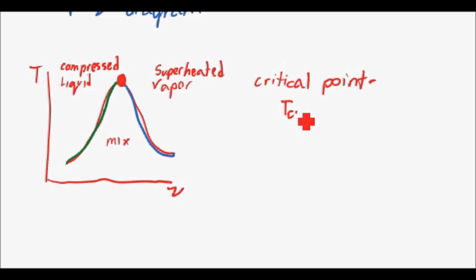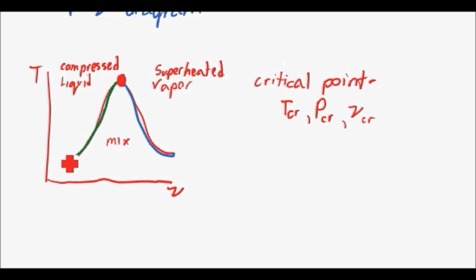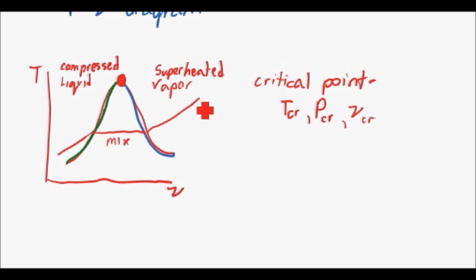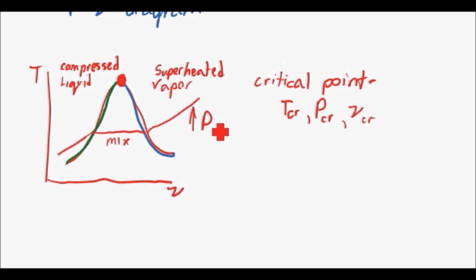At the critical point you have the critical temperature, the critical pressure, and the critical specific volume. If we look at the constant pressure lines on this plot, you have a straight line at the beginning because the temperature and pressure do not change during a phase change, and then temperature continues to increase. As you go upwards on this plot, pressure increases with an increase in temperature on the specific volume plot.